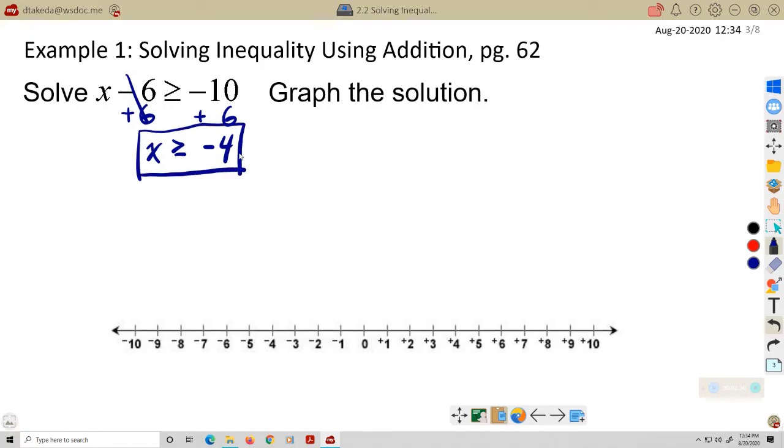So we're going to graph this solution here. My boundary is at negative 4. I'm going to use a solid dot because X is also equal to negative 4. So there's one solution. X is equal to negative 4. But X is also greater than negative 4. So all the numbers that are greater than negative 4 are going to be to the right of negative 4. Remember, a line like this is just a series of points. So this is an infinite number of points that look like a line. We represent it with a line.